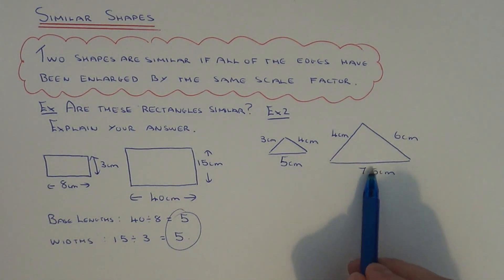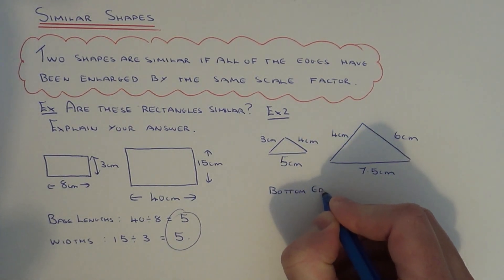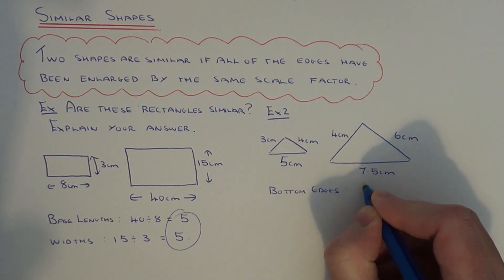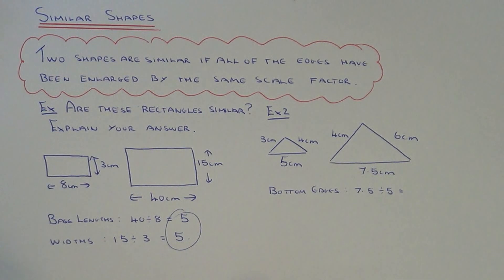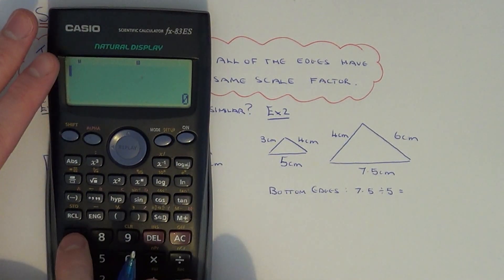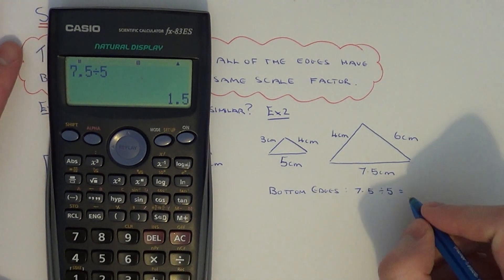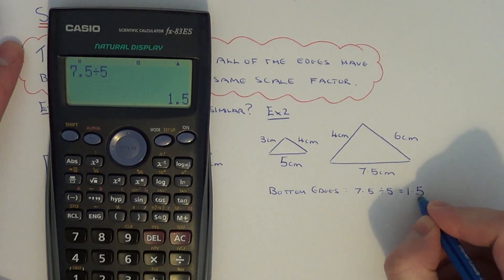Let's first of all divide the bottom edges of each triangle. That would be 7.5 divided by 5. It's a little bit tricky this one so let's use our calculator. 7.5 divided by 5 gives 1.5.